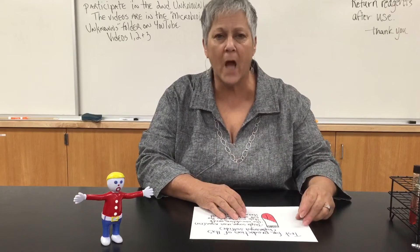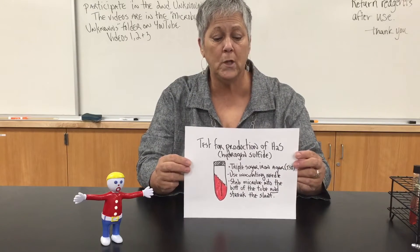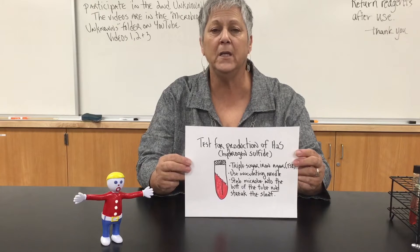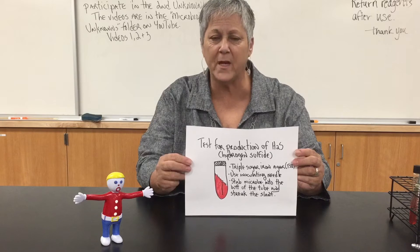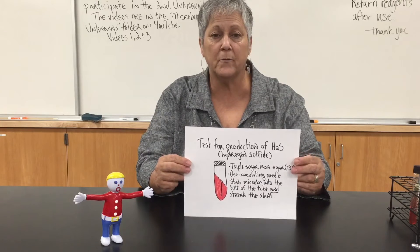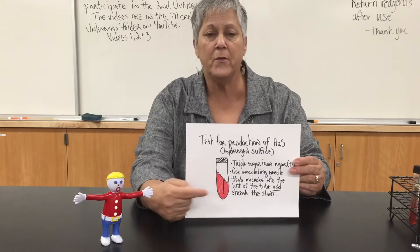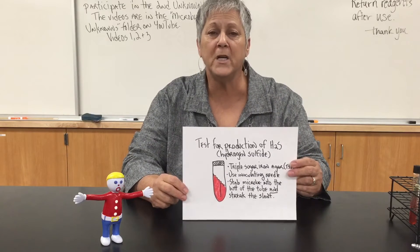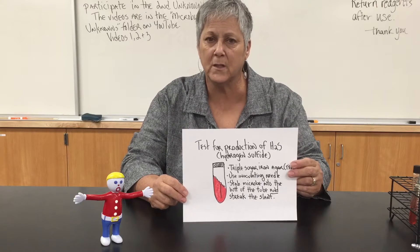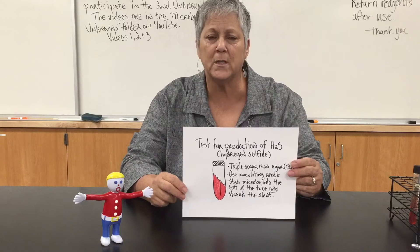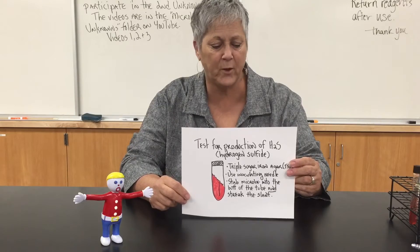Let's talk about inoculating TSI, or triple sugar iron agar. You're going to use your inoculating needle rather than your loop. Before you flame your needle, straighten out the wire, flame it, remove a little bit of the organism from the slant that the lab tech provided you with, and then you're going to stab the organism into the butt of the tube. As you withdraw the needle, you also streak the slant. It's really important that you get some of the organism under the surface of the agar, trapped in the bottom part of the butt of the tube.